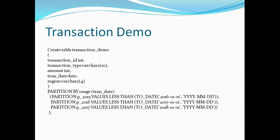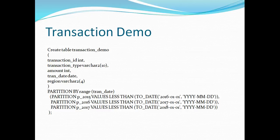I have my transaction demo table here and this is the syntax of range partitioning. The keyword PARTITION BY RANGE tells Oracle that I want to partition this table based on range. Transaction_date is my partitioning key, and I'm creating three partitions. Partition P_2015 stores values where the transaction date is in 2015 or before, P_2016 stores data where the transaction date is in 2016, and P_2017 stores data where the transaction date lies in 2017.